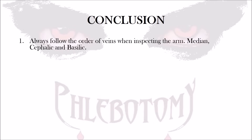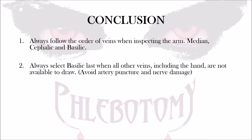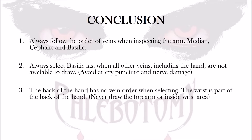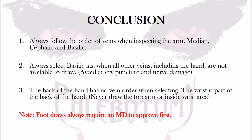In conclusion, always follow the order of veins when inspecting the arm: the median cubital, cephalic, and basilic vein — inspecting both the right and left arm when attempting a venipuncture. Always select the basilic last when all other veins, including the hand, are not available to draw, avoiding an arterial puncture and possible nerve damage. The back of the hand has no vein order when selecting, and the wrist is part of the back of the hand. Never draw the forearm or inside the wrist area — that is against the standard of care. If nothing is accessible on both arms or the hands, the foot can be considered but only with an MD approval first.